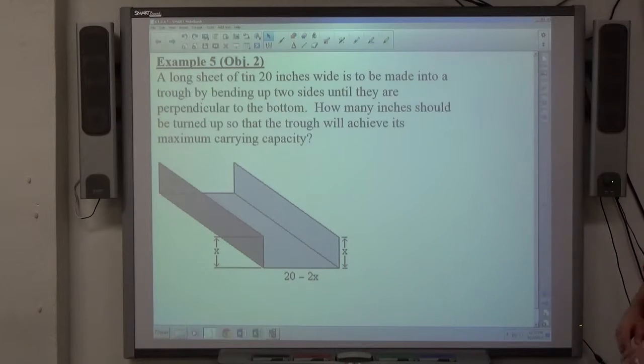For example 5, a long sheet of tin 20 inches wide is to be made into a trough by bending up two sides until they are perpendicular to the bottom. How many inches should be turned up so the trough will achieve its maximum carrying capacity?